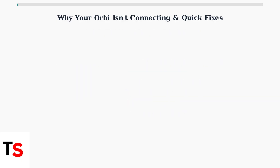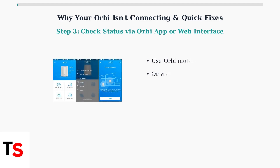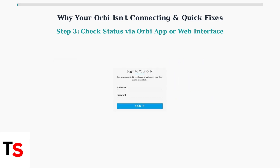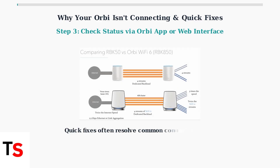Finally, use the Orbi app or web interface to check your connection status. Use the Orbi mobile app or visit orbilogin.com to check the internet status and identify any error messages that might help diagnose the problem. The web interface provides detailed diagnostic information and allows you to monitor your network's performance. These quick fixes resolve most common Orbi connection issues.